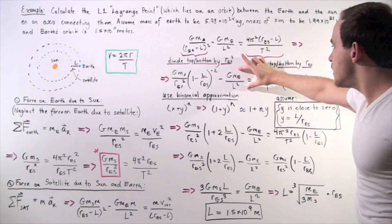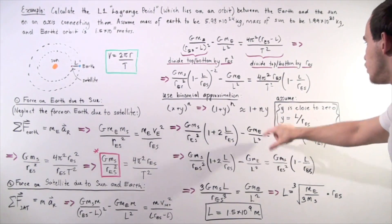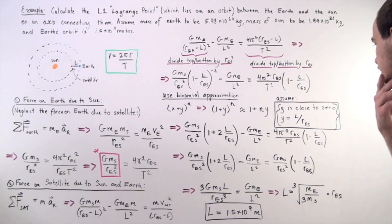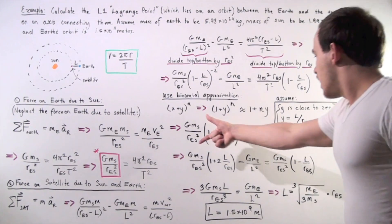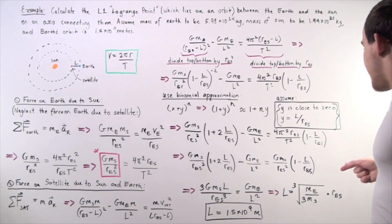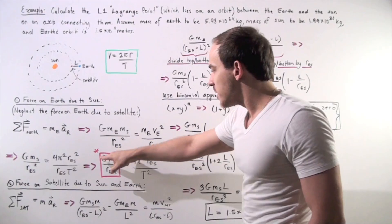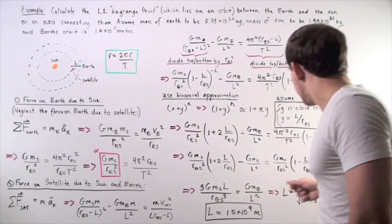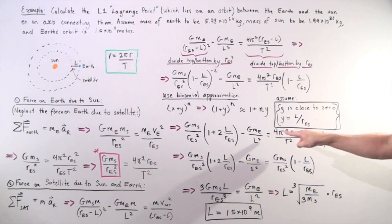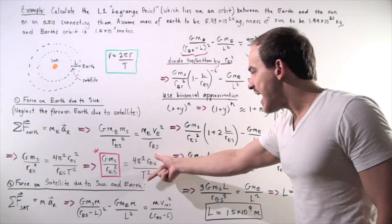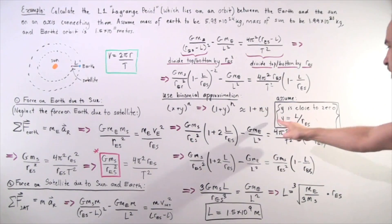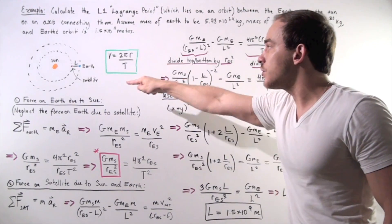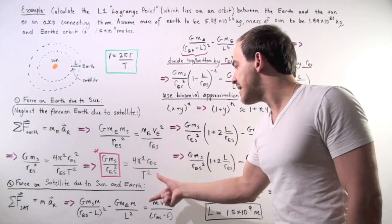Now this is minus this term, which stays the same, and equals this term, which also stays the same. We take this term and go back to our starred equation from step one. Because the period of the Earth and the period of the satellite are exactly the same, we substitute that expression and get the following result.